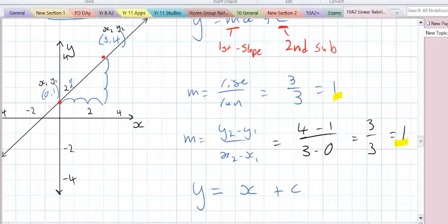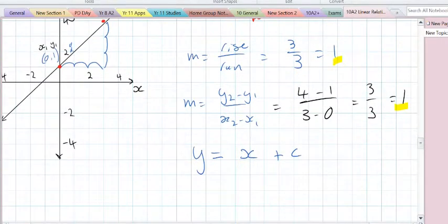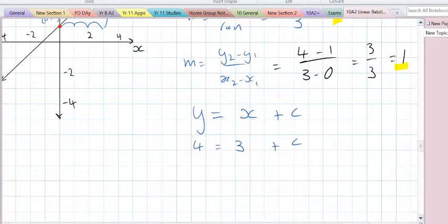We can substitute either point, it doesn't matter which. Let's take this one. Substituting means replacing the x and y with the coordinate points. In our case, y equals 4 and x equals 3. So 4 equals 1 times 3 plus c. Using the algebra we did yesterday, we rearrange. So c is equal to 4 minus 3 is 1.